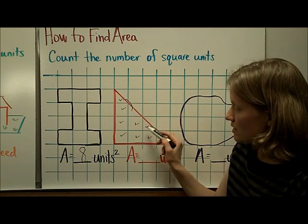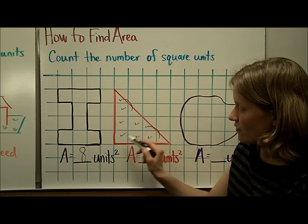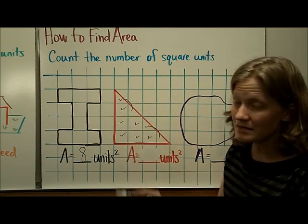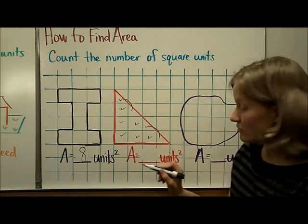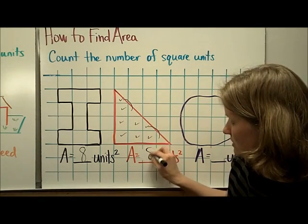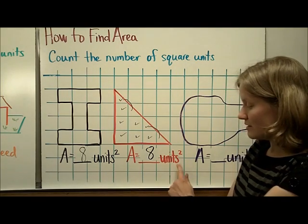So I've got one, two, three, four, five, six, seven, eight square units that this triangle takes up. So the area of this triangle is eight square units.